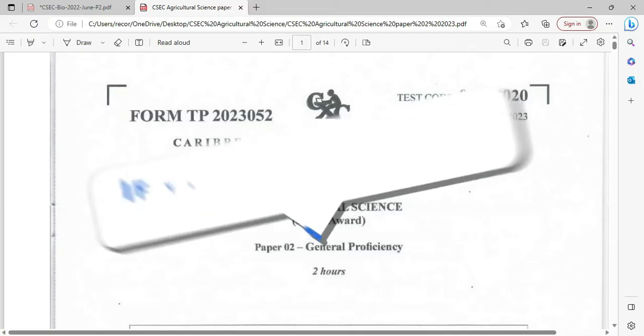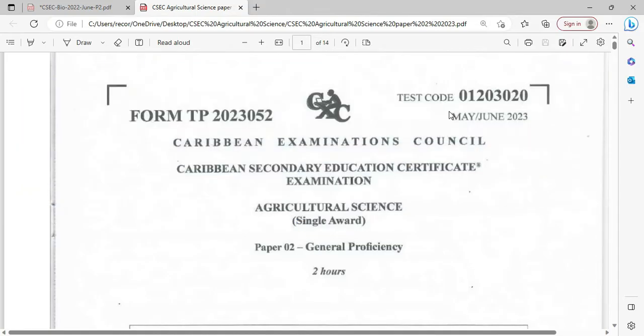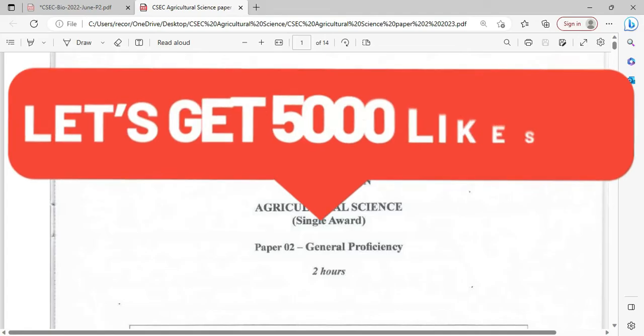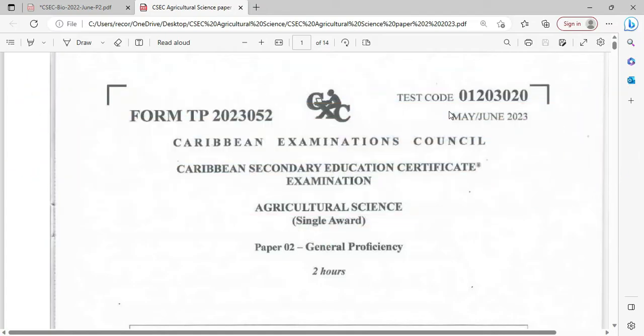When you subscribe, please be reminded to click that notification bell and select all so you'll be notified as soon as there's a new publication. You want to like the video so that the video is saved to your playlist. Should it be turned off, you'll still have access to it.